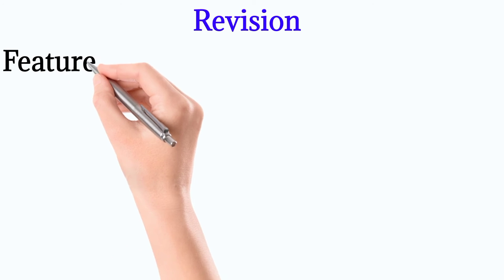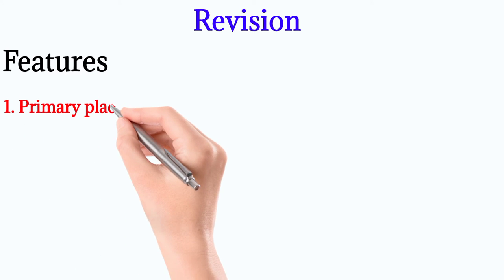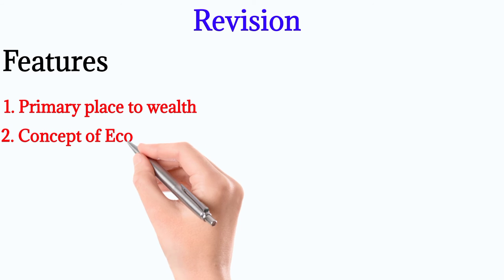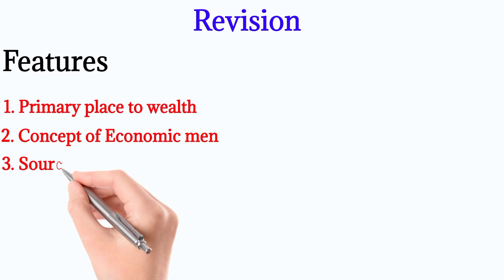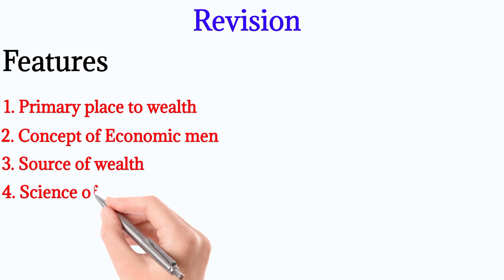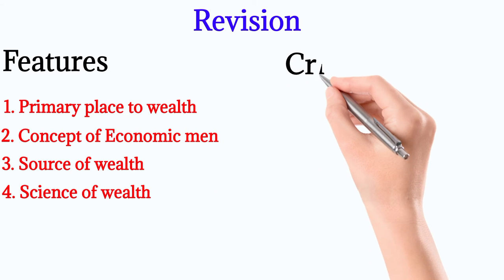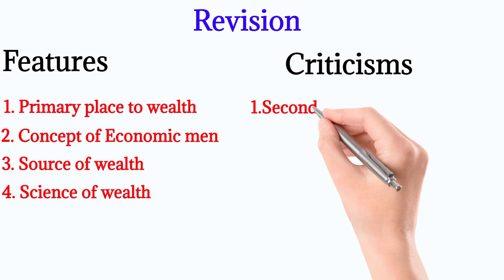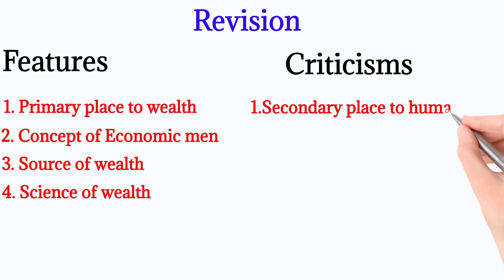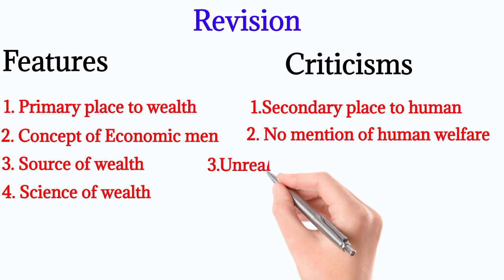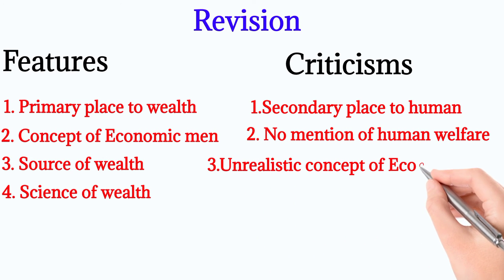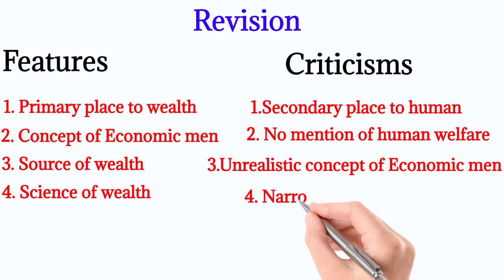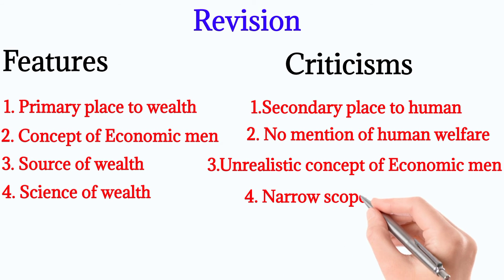Now let us revise what we have studied. Features: 1) Primary place to wealth, 2) Concept of economic men, 3) Source of wealth, 4) Science of wealth. Major criticisms: 1) Secondary place to humans, 2) No mention of human welfare, 3) Unrealistic concept of economic men, 4) Narrow scope.